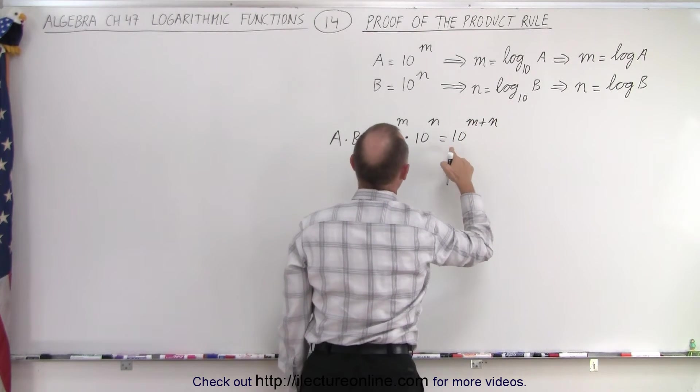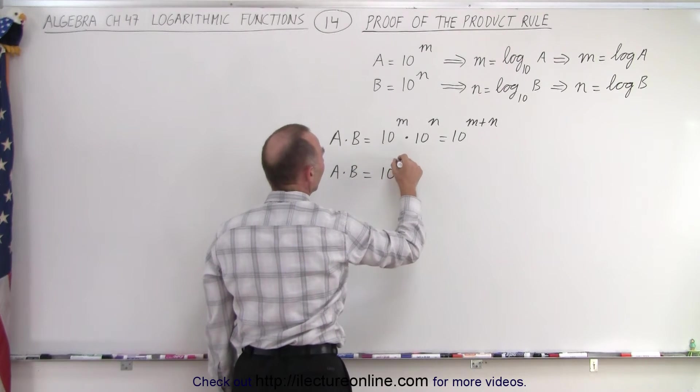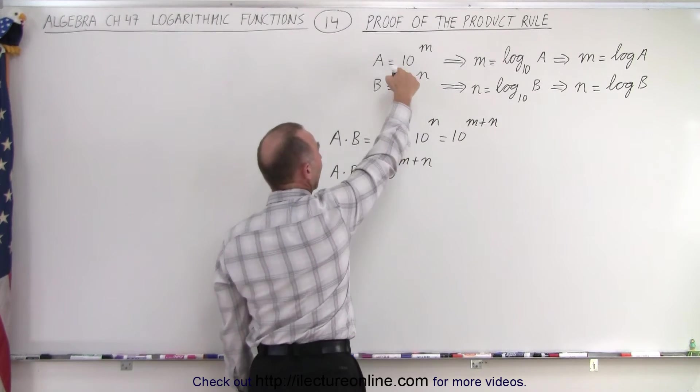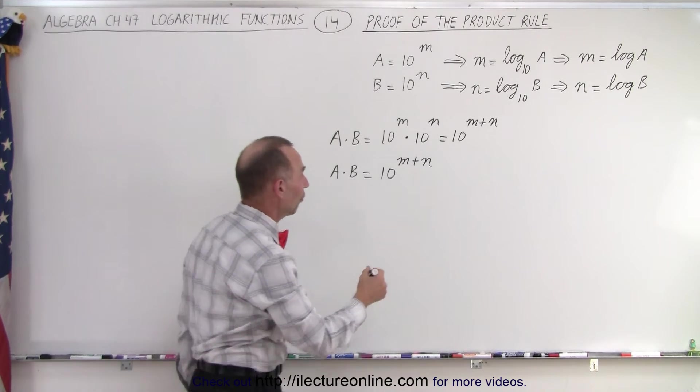Now again, what we have here is we can write that A times B is equal to 10 raised to the m plus n power. Again, we have, just like we had over here, the exponential form which we can then convert into the logarithmic form.